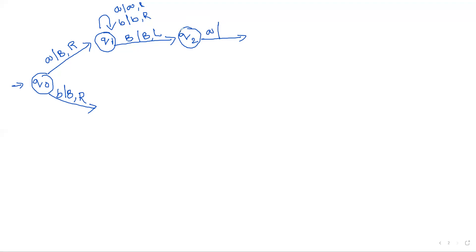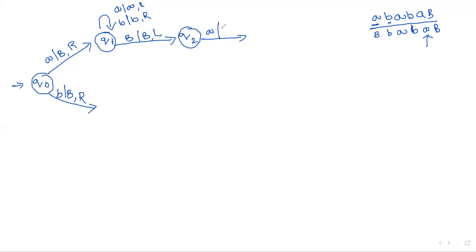If the string contains any symbols a or b — since this is an odd-length palindrome and we start with 'a', compulsory if it is a palindrome it must end with 'a'. Assume the string is a b a b a — this is the only possible case. Starting from q0 with 'a': replace 'a' with blank, 'b' stays 'b', 'a' stays 'a', 'b' stays 'b', 'a' stays 'a', then blank. Moving to the left, compulsory we must find 'a' only — if anything else is present, it is not a palindrome. So 'a' is replaced with blank and move to the left.